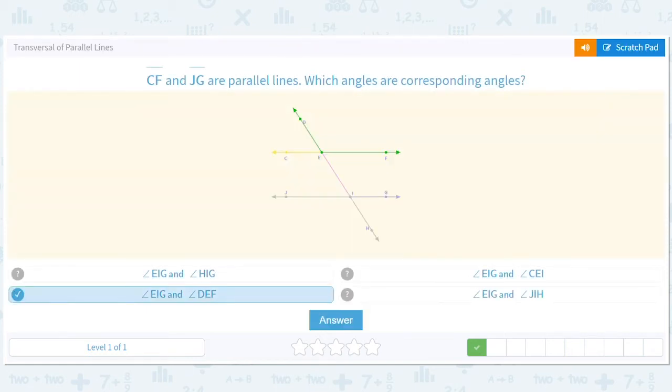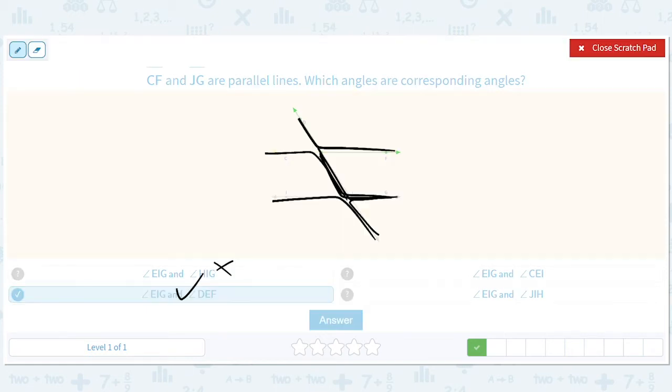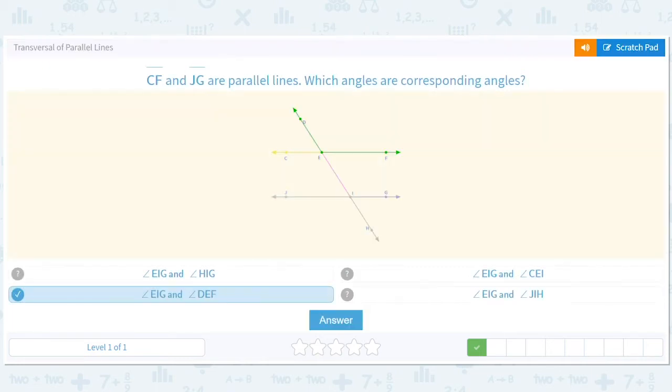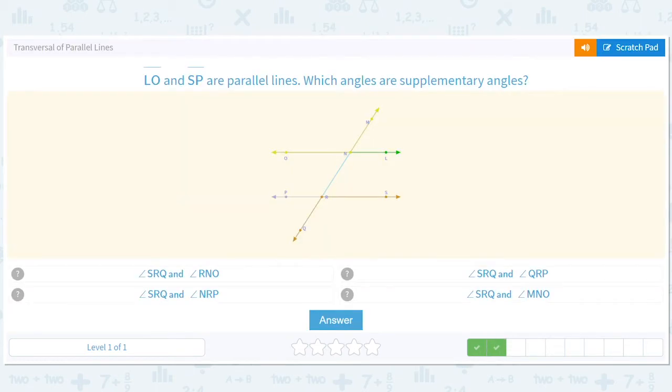So a better way to do this would just be to be like, okay, they're all EIG. Which one's corresponding? That one. Look for that answer. DEF.